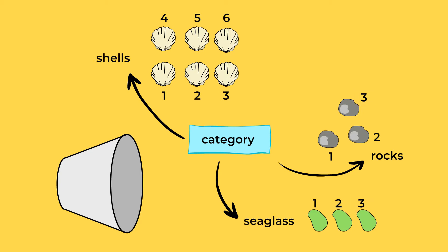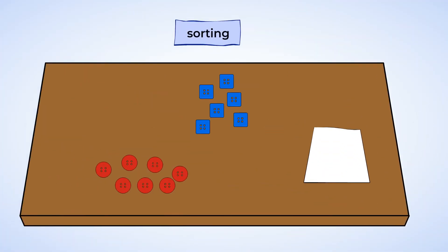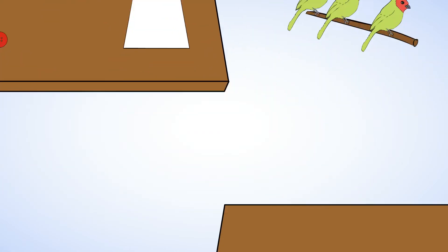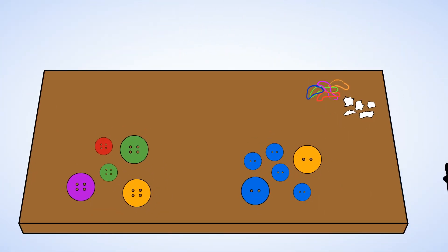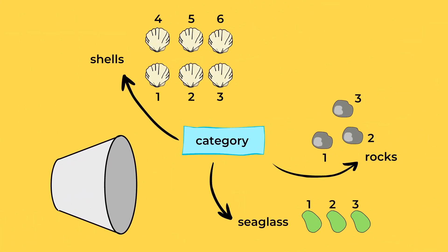And there are more shells than rocks or sea glass. That's because six is bigger than three. You did an amazing job today. We sorted things by color, size, and shape. Then we counted how many were in each category.